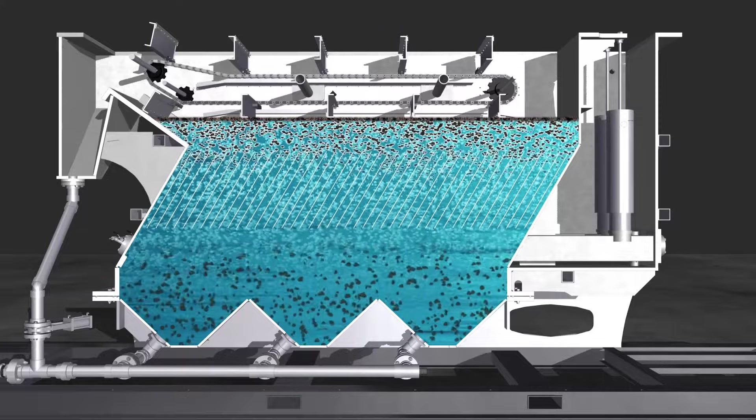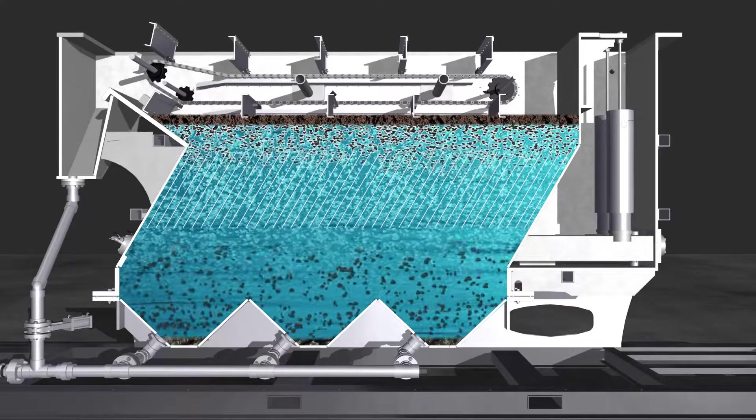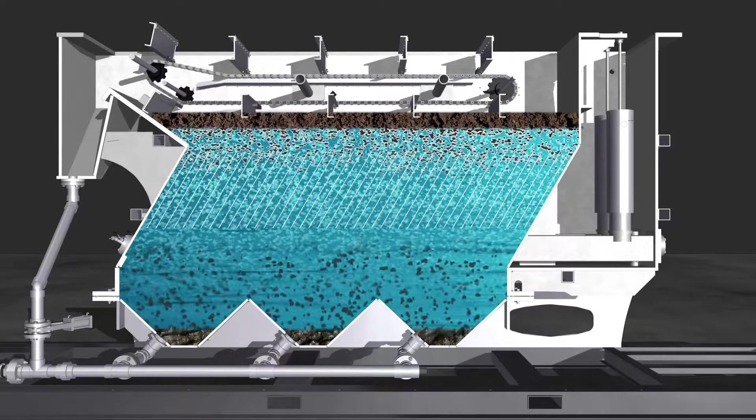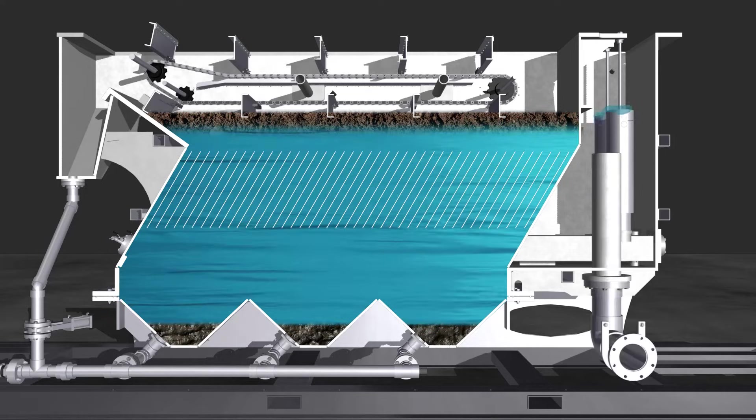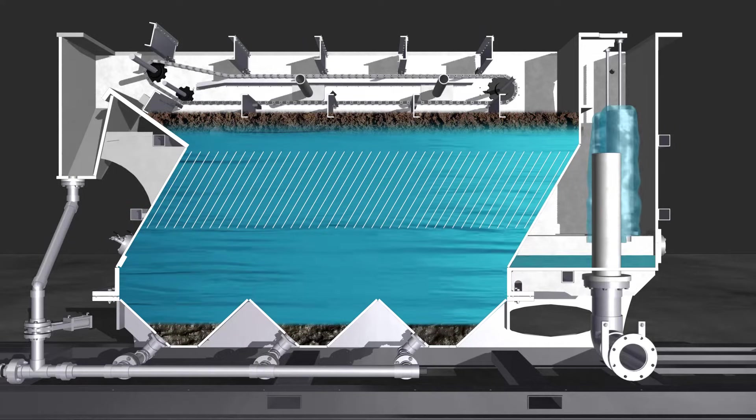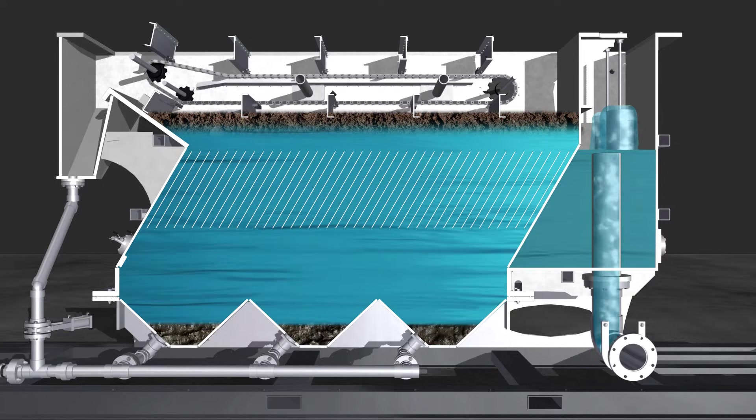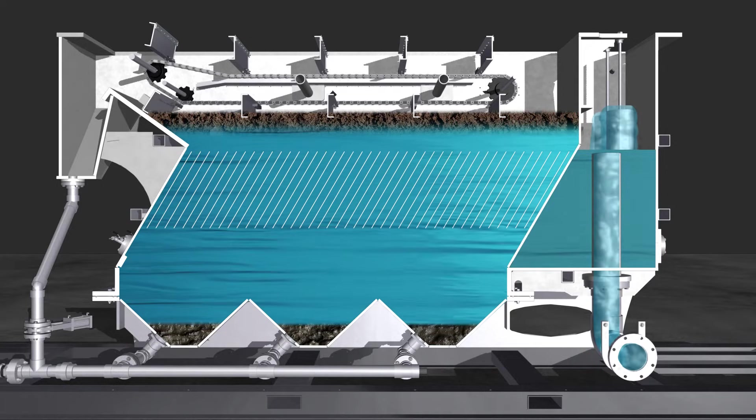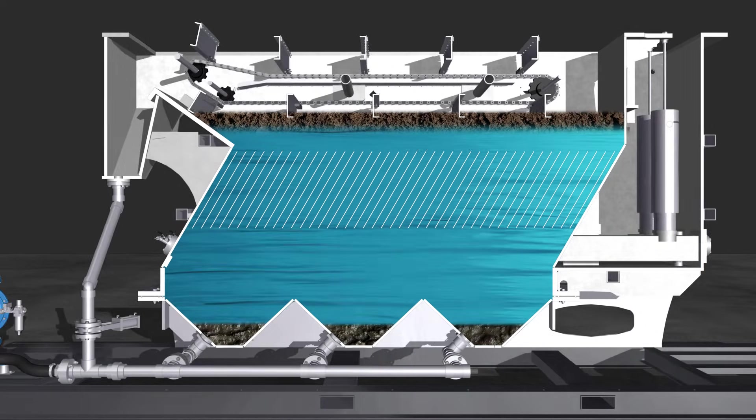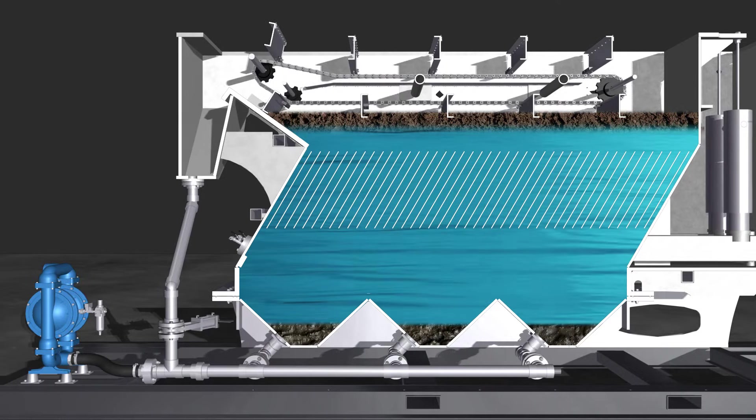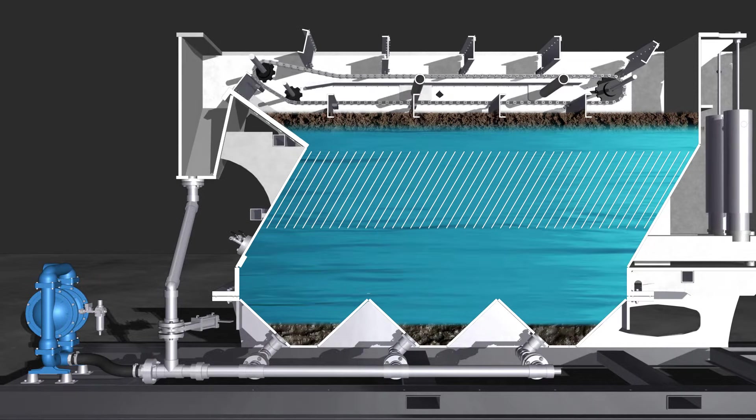While most of the waste particles will float, some will be heavier and will settle down into the discharge cones. The treated water travels through the lateral lines and up through the adjustable weir tubes into the effluent chamber to exit the DAF, while the floating waste particles will then be skimmed off the top and into the sludge hopper.